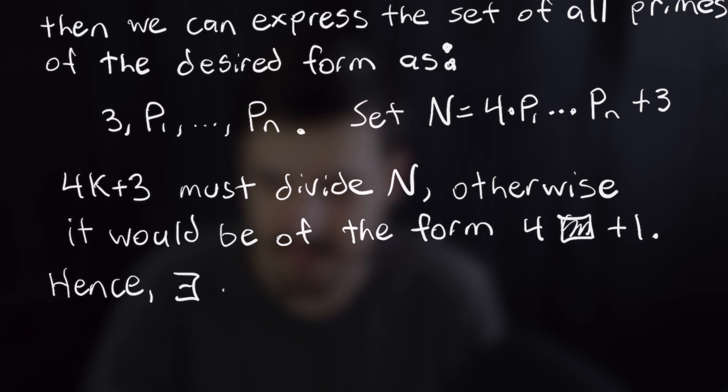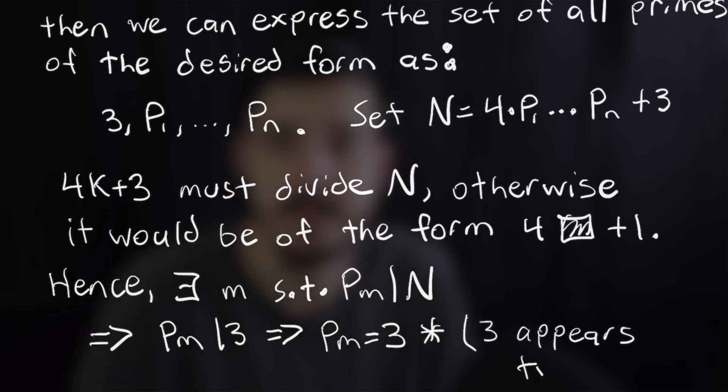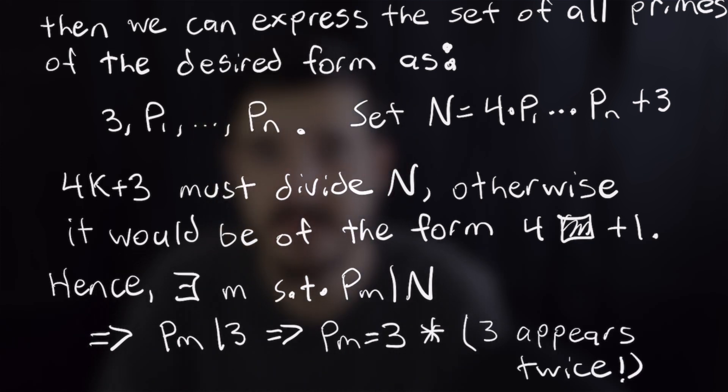This means that there exists an m such that p_m divides N but that of course implies that p_m divides three which means that p_m is equal to three and that is a contradiction as we cannot have three twice in our set which means that our original premise is wrong and there are in fact infinitely many primes of that form.